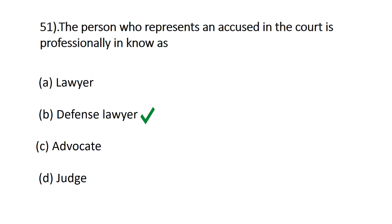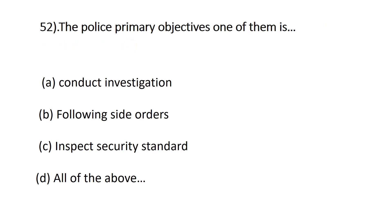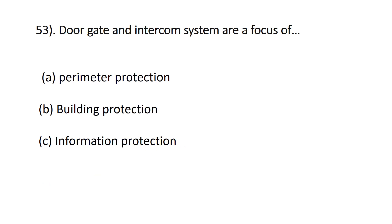Question fifty-two: the police's primary objective — A) conduct investigation, B) follow site order, C) inspect security standard, D) all of the above. The correct answer is A, conduct investigation. Following the site order is a security guard's responsibility; inspecting security standards is the regulatory authority's role. Conduct investigation is the police's primary objective.